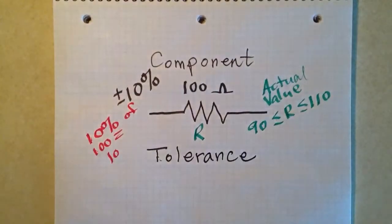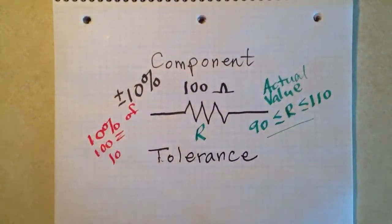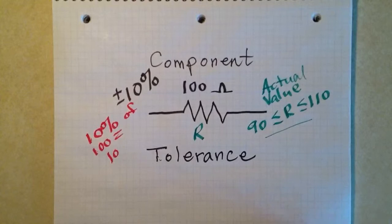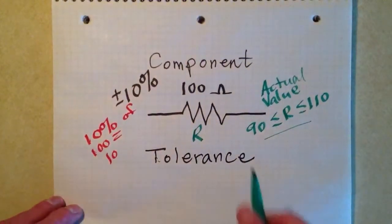These little symbols right here mean less than or equal to 90 ohms. So 90 ohms is less than or equal to R. The actual value of the resistor as you might measure it with an ohmmeter is less than or equal to 110. That is what they're telling you or promising you when they tell you that a resistor has a value of 100 ohms plus or minus 10%.